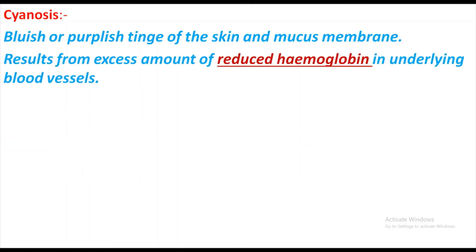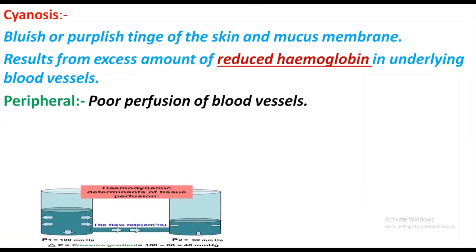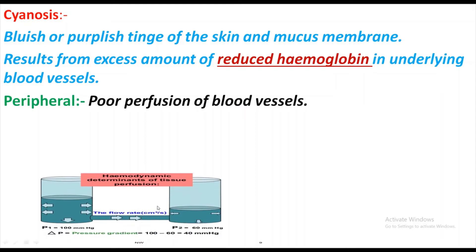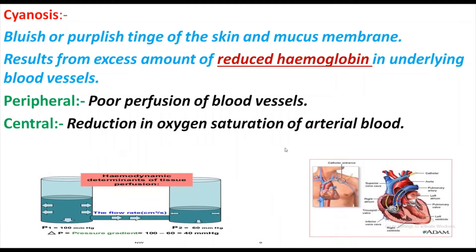Cyanosis is a bluish or purplish tinge of the skin and the mucous membrane. It results from an excessive amount of reduced hemoglobin in the underlying blood vessels. Peripheral cyanosis is due to poor perfusion of the blood vessels, which gives rise to peripheral cyanosis.